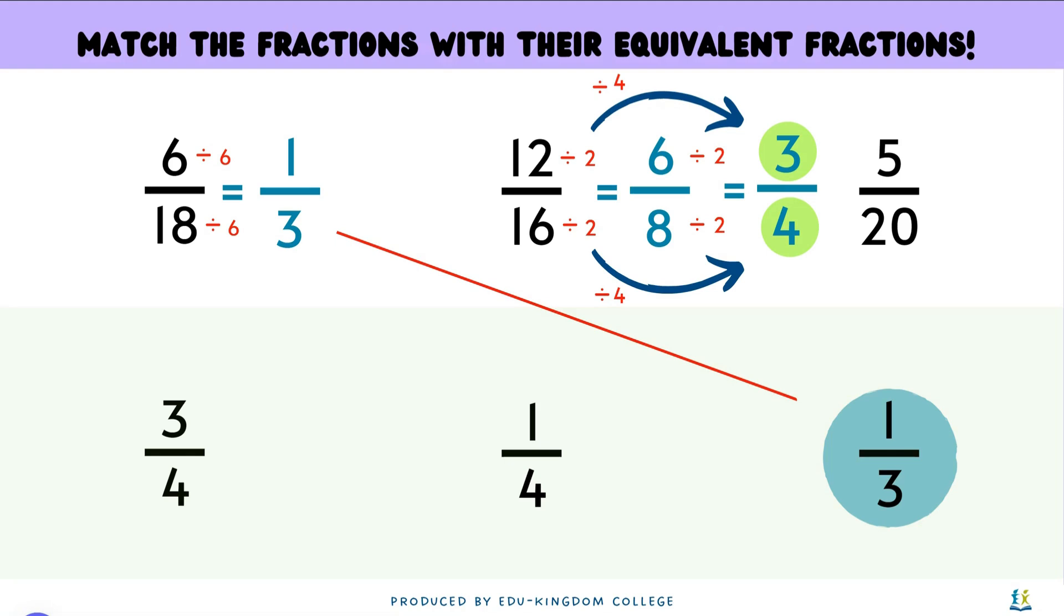So we can match 12 over 16 with 3 over 4. For the fraction on the right here, 5 over 20. Both 5 and 20 can be divisible by 5. 5 divided by 5 gives 1 and 20 divided by 5 gives 4. Giving the simplified fraction to be a quarter. So we know that 5 over 20 is equivalent to a quarter.